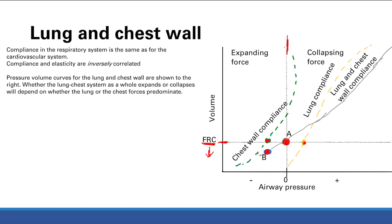If we go above functional residual capacity — meaning the patient takes in air — we look at the average between the two curves, and we see that the main force is a collapsing force on the lung-chest wall system. So we took in air, and now our system wants to go back to equilibrium at functional residual capacity, so it's going to want to collapse. Chest wall wants to expand, lung wants to collapse, and what the combined system will do depends on the balance between the two.